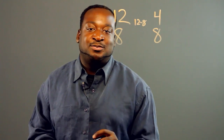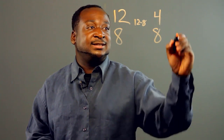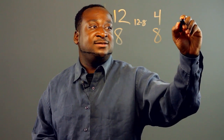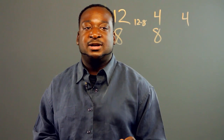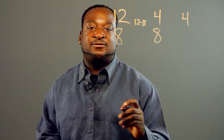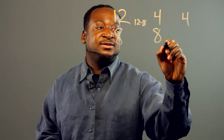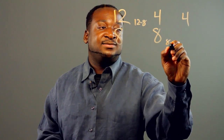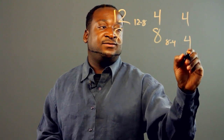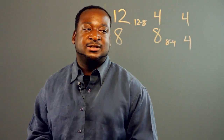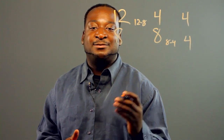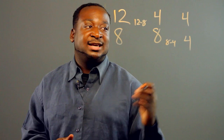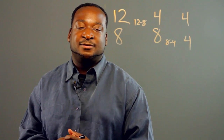And we repeat the process. We keep 4, the smaller number, and we subtract it from the larger number: 8 minus 4, and we get 4. So now we have our answer — the greatest common factor is 4.